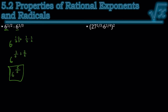Let's try this one. Here the bases are different, but we're multiplying so we can distribute the exponent. So it would be 27 to the 2 thirds — it's exponent, parentheses, exponent, so we multiply — times 6 to the 2 fourths. Remember the denominator of the exponent is the index, so it would be the cube root of 27 squared. And 2 fourths is the same as 1 half, so it would be the same as the square root of 6 to the 1st.